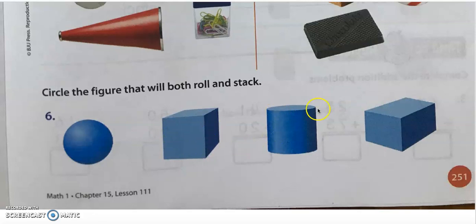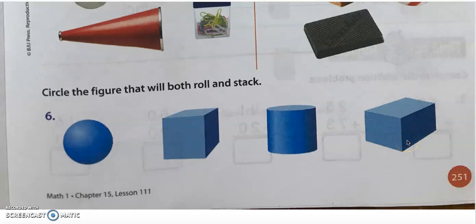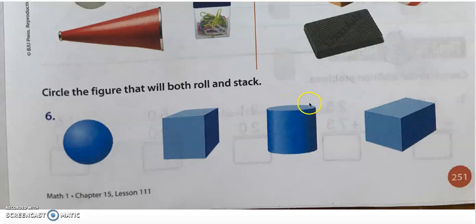The cylinder over here can roll because it has curved surfaces, and it can also stack because of the flat surfaces — so this one can roll and stack. What about this one? It does not have curved surfaces so it cannot roll, but it can stack. So only the cylinder can both roll and stack, because it has both curved and flat surfaces. Does that make sense?